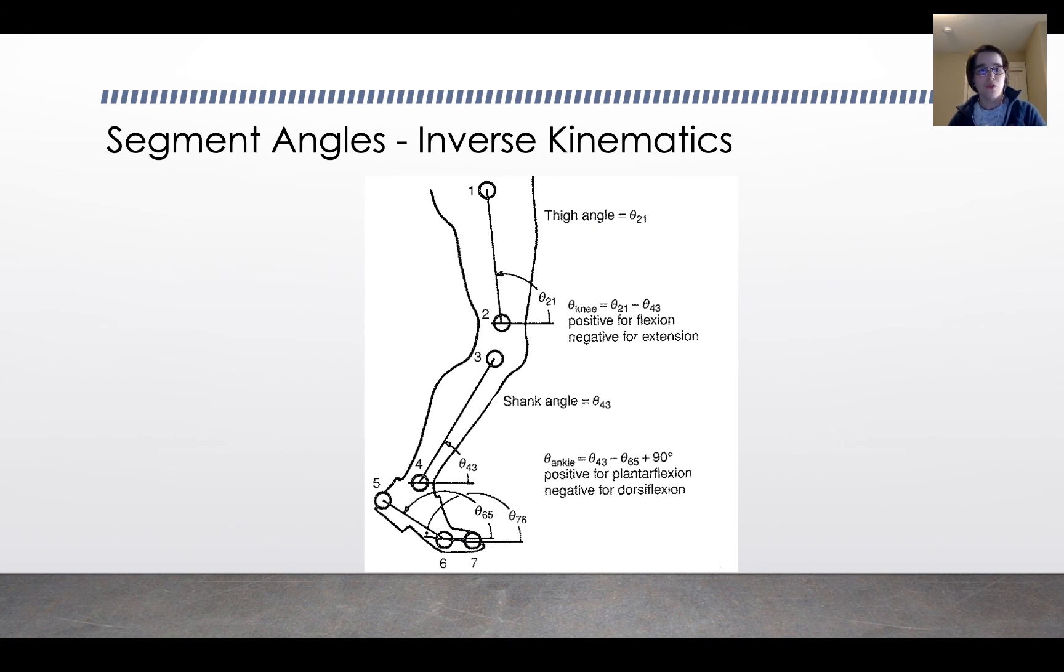So just a brief overview of segment angles and inverse kinematics. Here's a model for the lower leg. This is a more complicated model because it's got two segments for the feet. Sometimes you just have one segment for the foot where you would just use what's labeled here as four, five, and six and ignore the toes on seven. You can see some different angles defined here. Theta ankle is angle 43 minus angle 65 with this model plus 90 degrees. The shank angle is just angle 43. The shank is the lower leg. The thigh angle is just angle 21. The thigh is the upper leg. The knee angle is angle 21 minus angle 43. The knee angle is positive for flexion and negative for extension.